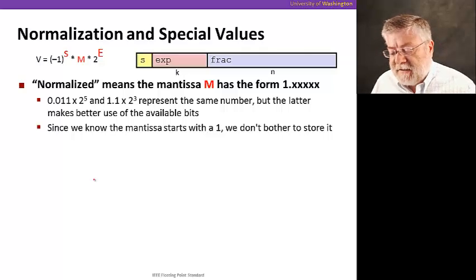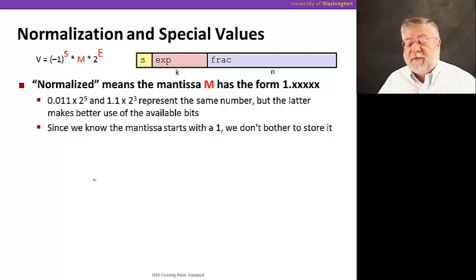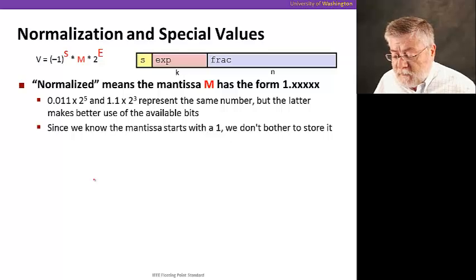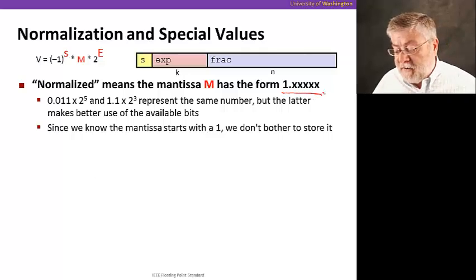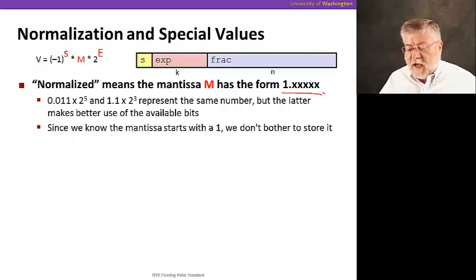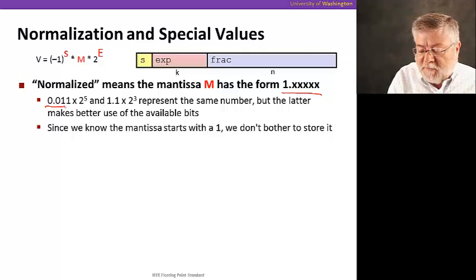So let's talk about the mantissa first, the significand. We're going to talk about normalized numbers, meaning that the mantissa is always going to be of the form 1.xxxxx, some binary bits. This is analogous to what we do with scientific notation in decimal numbers. We always have values that start with one point something.